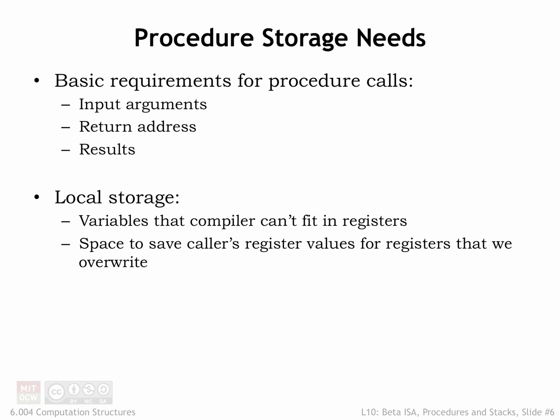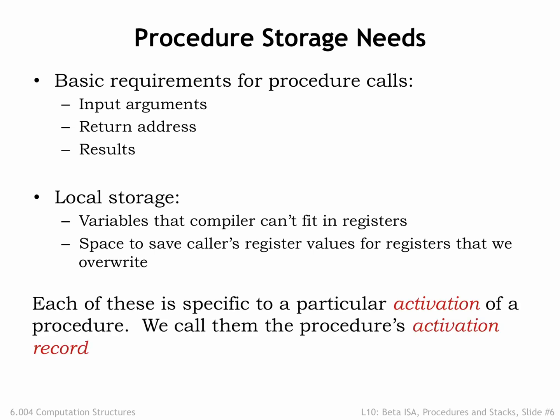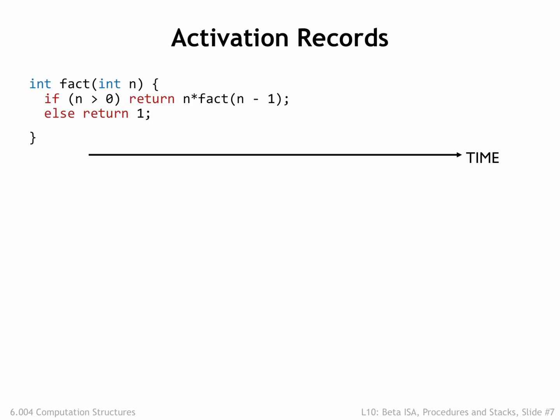We'd like to avoid any limitations on the number of arguments, the number of local variables, etc. So we'll need a block of storage for each active procedure call, what we'll call the activation record. As we saw in the factorial example, we can't statically allocate a single block of storage for a particular procedure since recursive calls mean we'll have many active calls to that procedure at points during the execution. What we need is a way to dynamically allocate storage for an activation record when the procedure is called, which can then be reclaimed when the procedure returns.